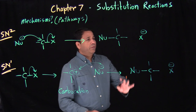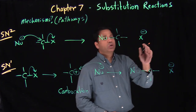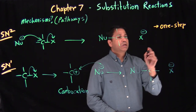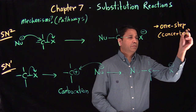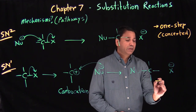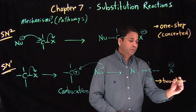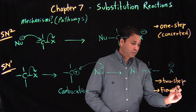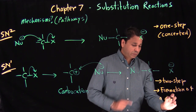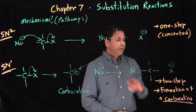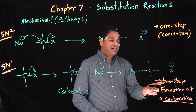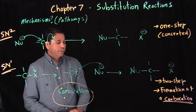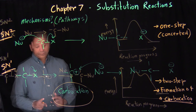SN2 is a one-step reaction, also called a concerted reaction. SN1 is a two-step process: step one — the leaving group leaves; step two — the nucleophile attacks. A key distinguishing feature is that SN1 involves the formation of a carbocation, whereas SN2 does not. Always keep track of carbocation formation when dealing with SN1.